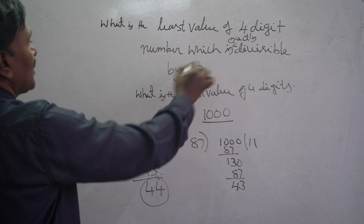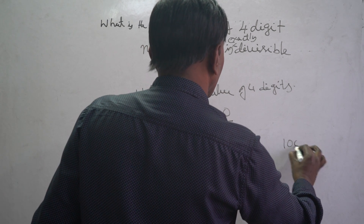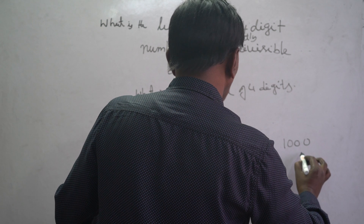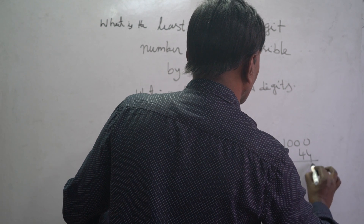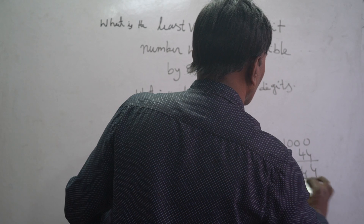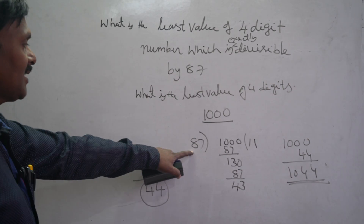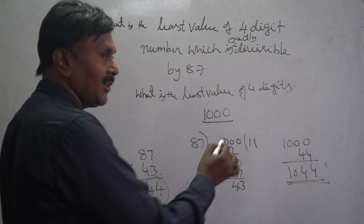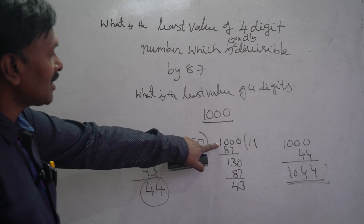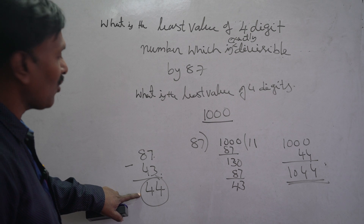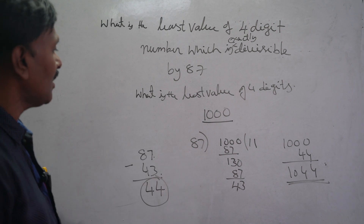So what is the least value of the number which is exactly divisible? It means here 1000 plus you have to add 44 to this number. So 1044 is exactly divisible by 87. You may also have a doubt — can you subtract 44 from 1000? Yes, it is divisible by 87 if you subtract 44.